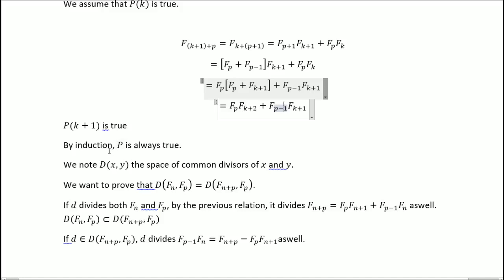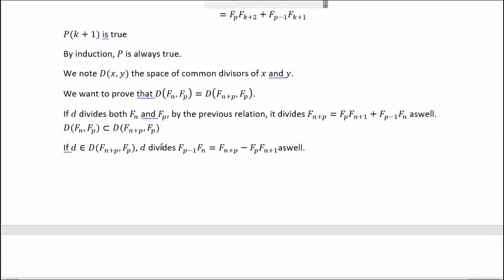So now we call D(x,y) the space of common divisors of x and y. We want to prove that D(F_n, F_p) equals D(F_{n+p}, F_p). If d divides both, by the previous relation it divides this because of this relation. So we have this inclusion, and we have this equation as well.